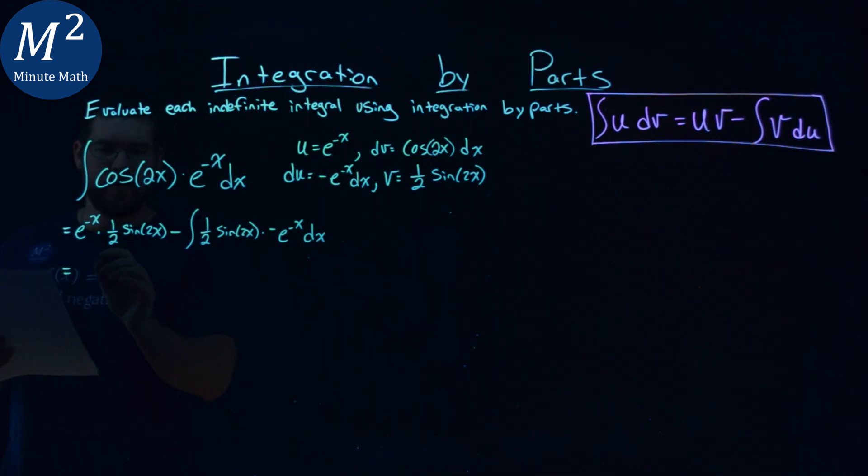So we have here, let's rewrite this as a single fraction. We have sine of 2x in the numerator over 2 in the denominator, and instead of e to the negative x power, e to the positive x power.